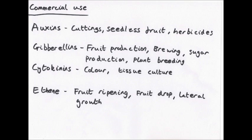Ethene is used commercially in many ways: it speeds up ripening in apples, tomatoes, and citrus fruits; promotes fruit drop in cotton, cherry, and walnut; promotes female sex expression in cucumbers, reducing the chance of self-pollination and increasing yield; and promotes lateral growth in some plants, yielding compact flower stems. Because ethene is naturally a gas, a chemical called 2-chloroethyl phosphonic acid has been developed, which can be sprayed in solution and releases ethene once inside the plant.